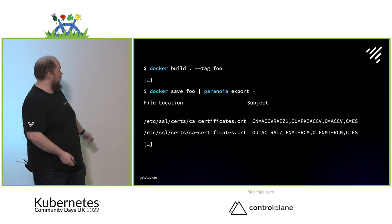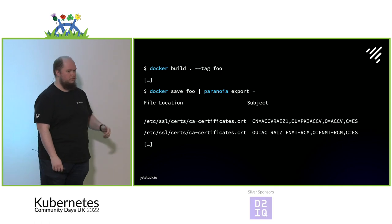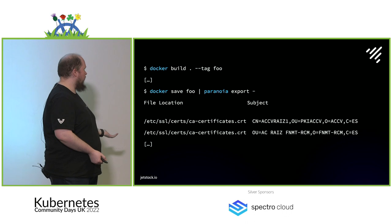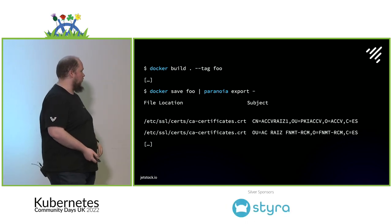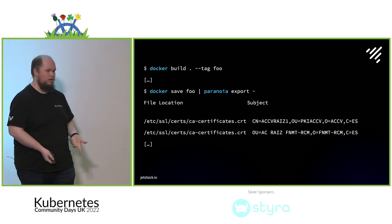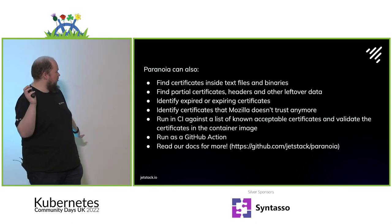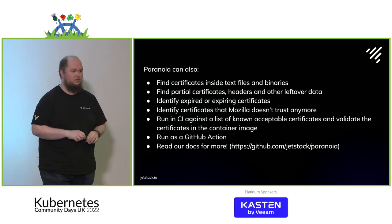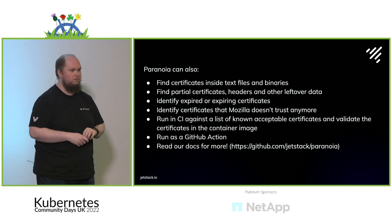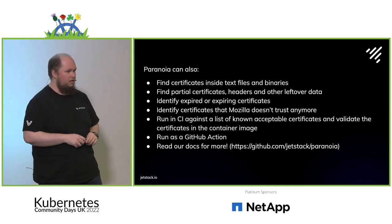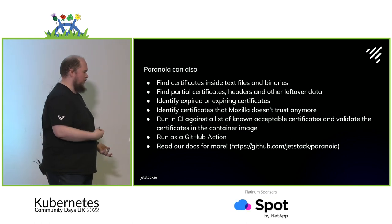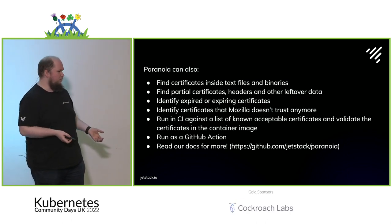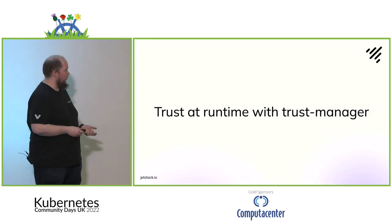You can also use it on local images — for example, do a Docker build, tag it, do Docker save, and pipe that in. It's actually more intelligent than just looking in default locations; it can find CA certificates inside of binaries, which was fun to implement. It has GitHub Actions support as well. This gives us some visibility to understand what's in our containers.